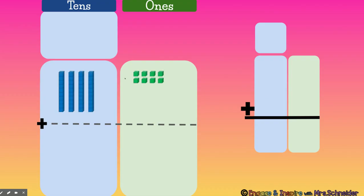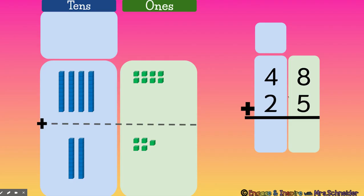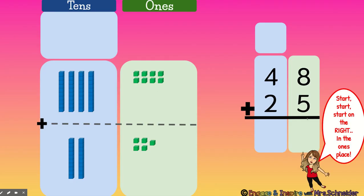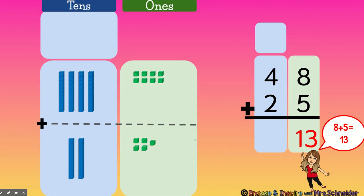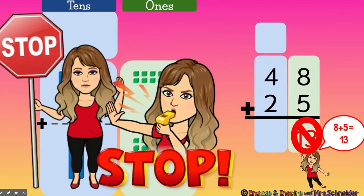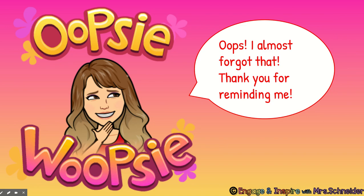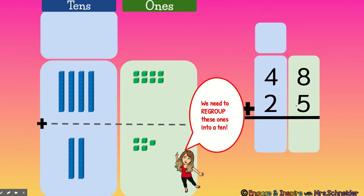So here you see the problem 48 plus 25. To solve this problem we always start on the right in the ones place, and eight ones plus five ones equals 13 ones. Can we write a 13 in the ones place? You cannot put a two-digit number in the ones place. We need to regroup these ones into a 10.